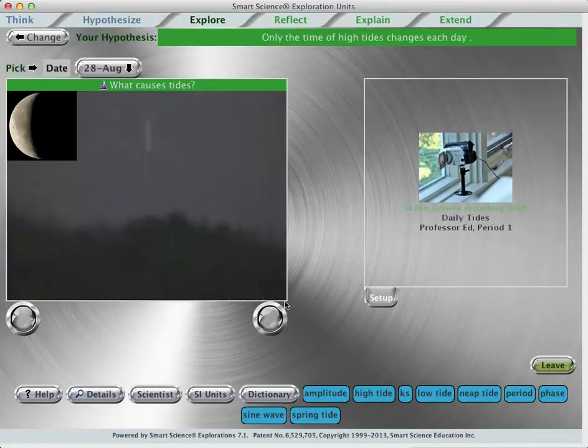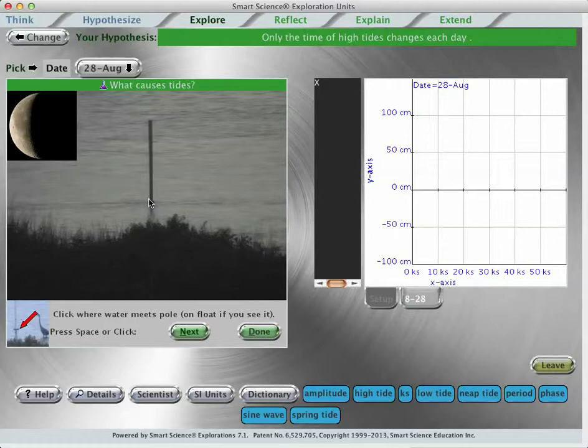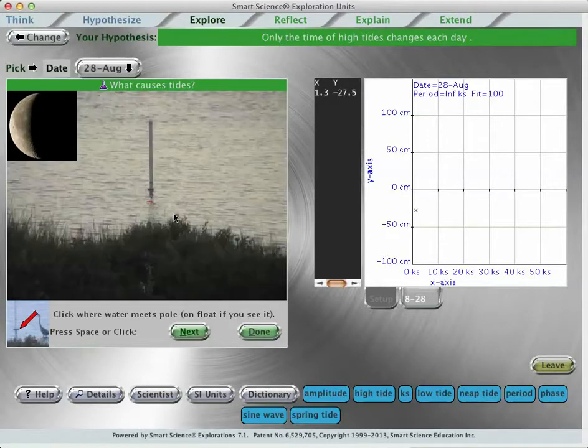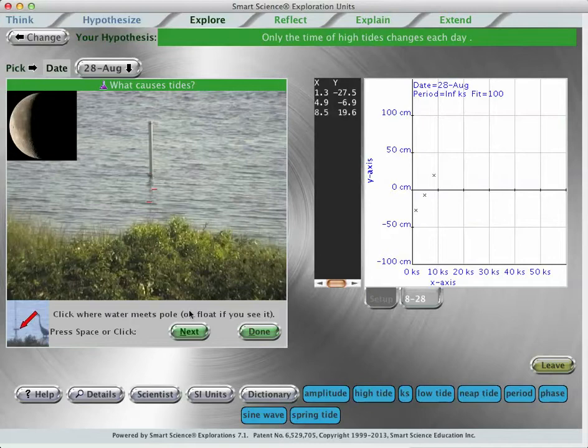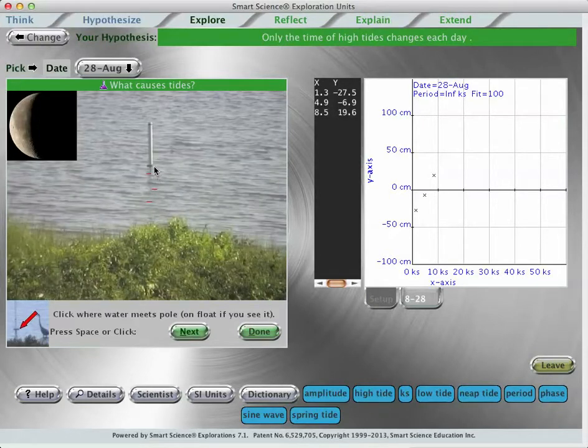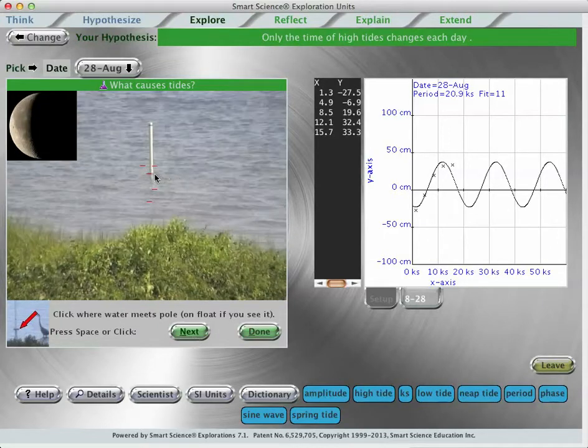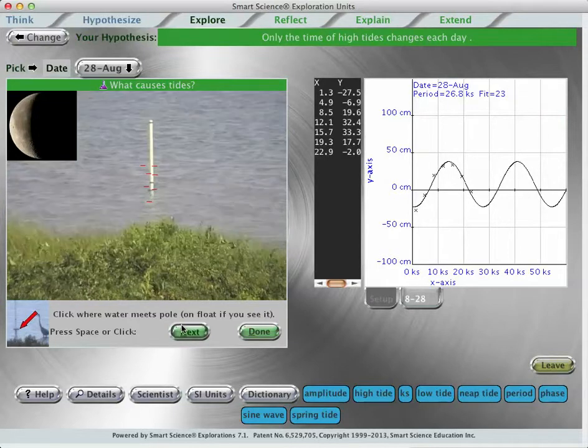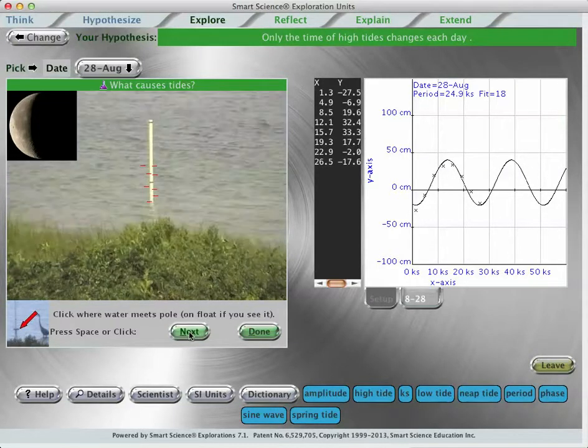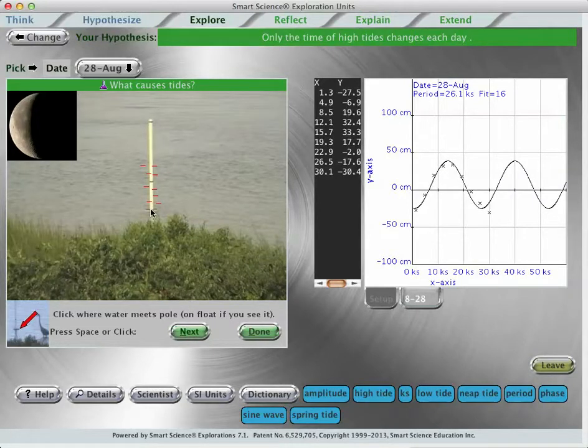Once the video is viewed all the way through, a measure button lights up, which I can press to interact with that video. Clicking on the video measures the position and time of a certain facet, in this case, height of the water. So very quickly here, I'm going to measure the height of the water throughout the day with this particular moon phase. The goal of the student is to gather enough data to try to support or refute the hypothesis that they have selected.